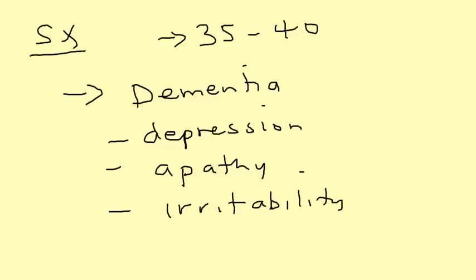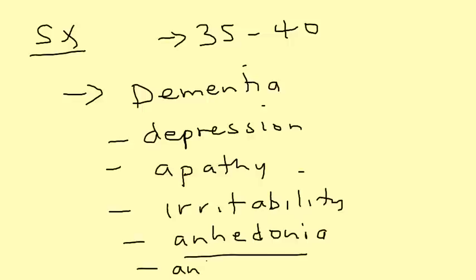Another symptom is anhedonia. By definition, anhedonia is when the person loses pleasure in things that used to bring them pleasure — anything they used to enjoy, they no longer enjoy. A person can also present with antisocial behavior. So it's a deterioration of a psychiatric nature.